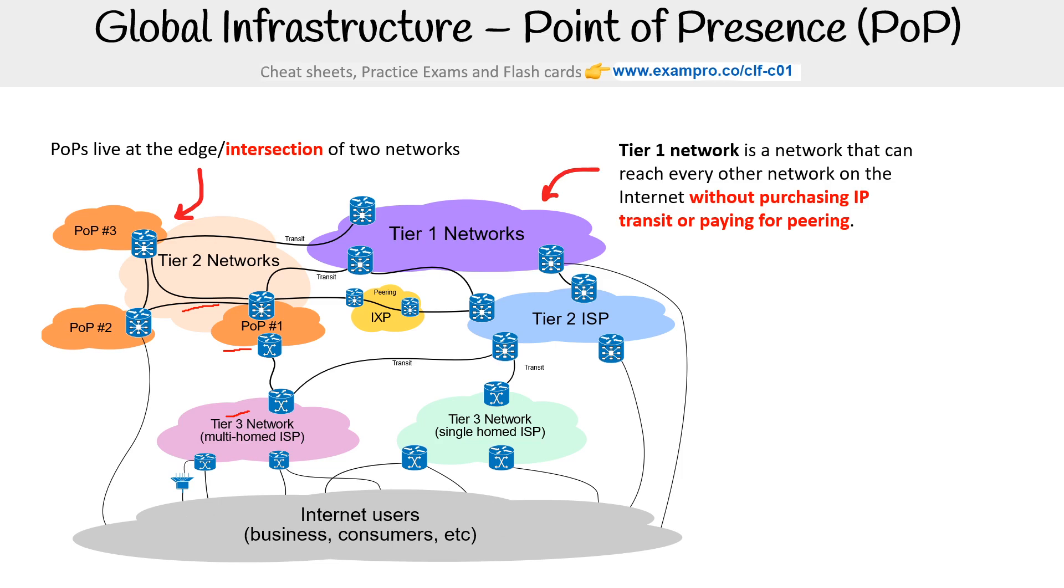So tier one networks is a network that can reach every other network on the internet without purchasing IP transit or paying for peering.